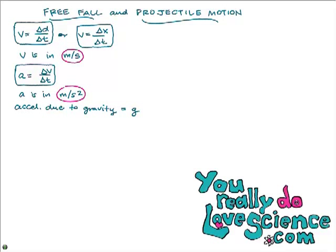A lot of students get shortcutty and say 'little g, yeah, that's gravity.' But I want you to be very accurate and call g 'acceleration due to gravity.' It's not gravity itself, because gravity is a force measured in newtons. If you're talking about little g, that is the acceleration due to gravity, which is in meters per second squared.